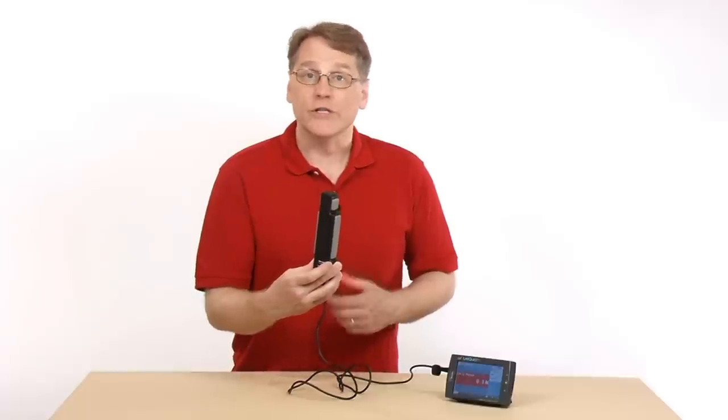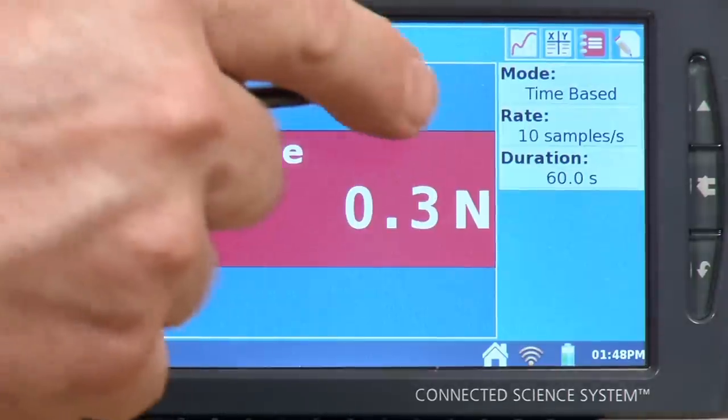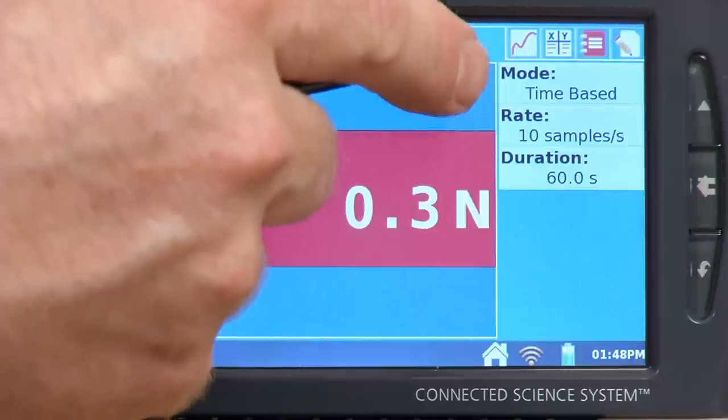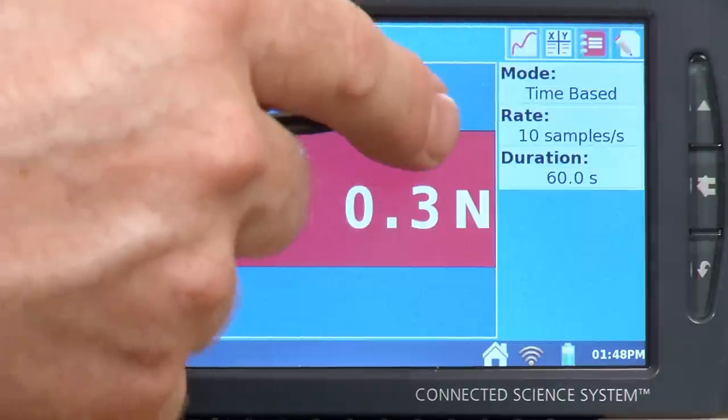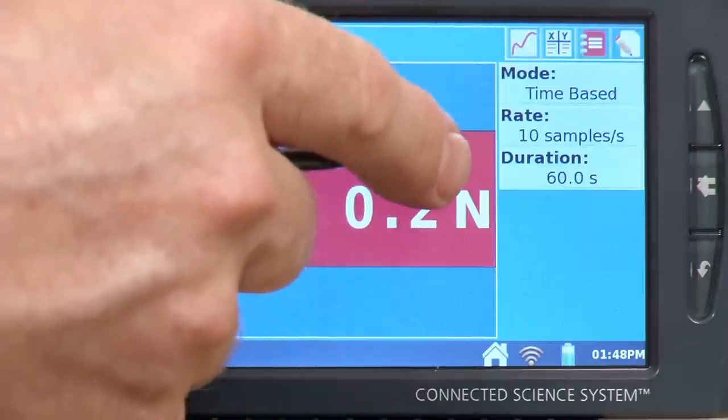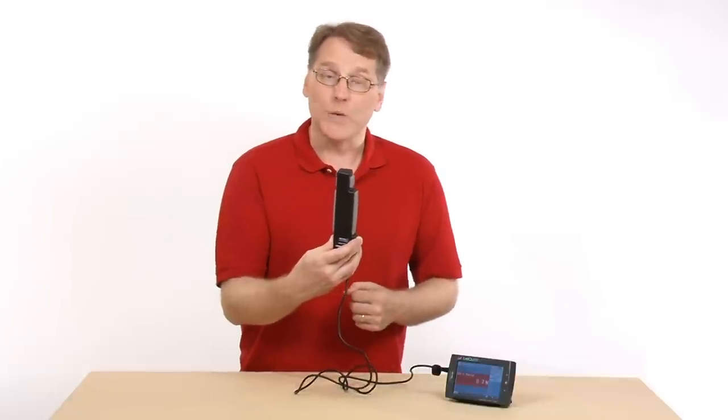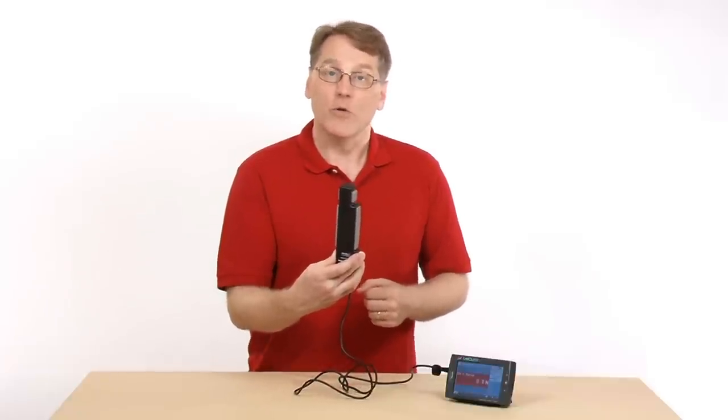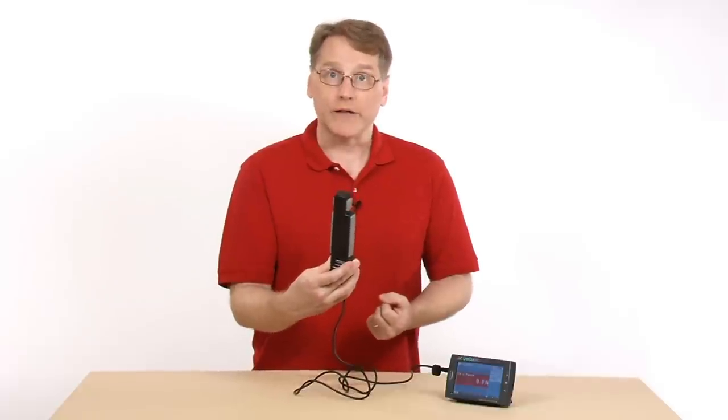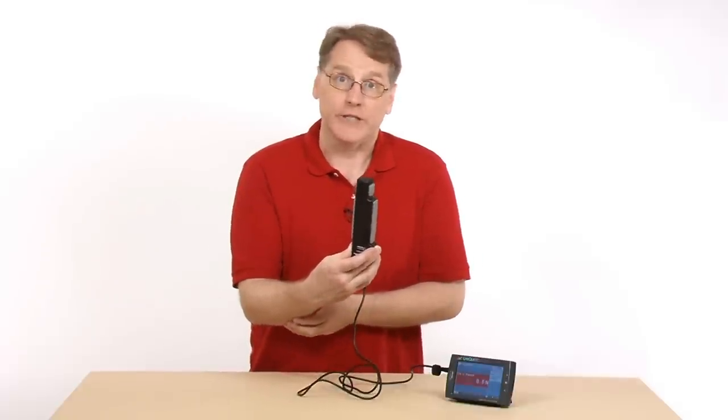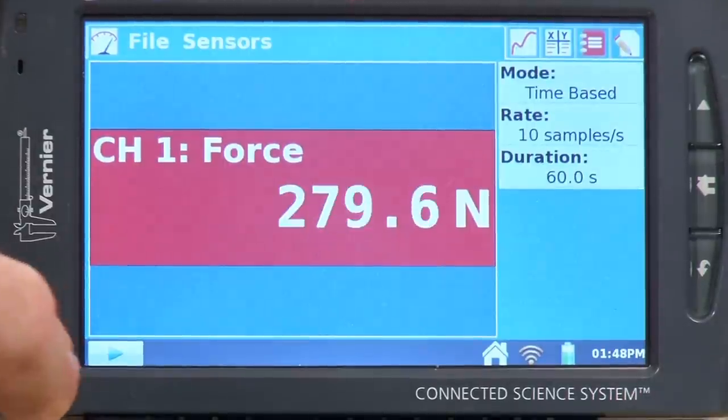I'm going to use the default settings for the device. It's a 60-second collection there. So if we look, we'll see we've got the time-based 10 samples per second for 60 seconds for collection. And I'm going to do one of the labs where I will squeeze this as hard as I can for the 60 seconds, and we look at what happens to my strength as my muscles fatigue. So what I want to do is squeeze it first as hard as I can.